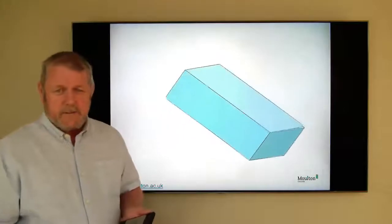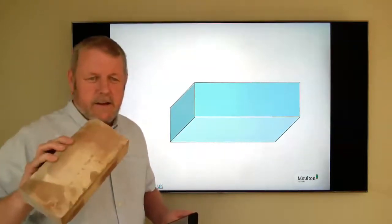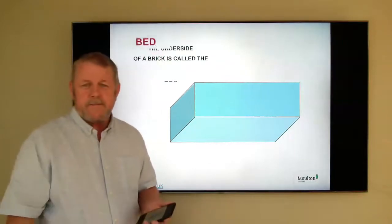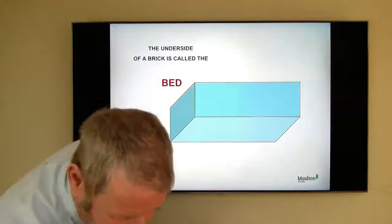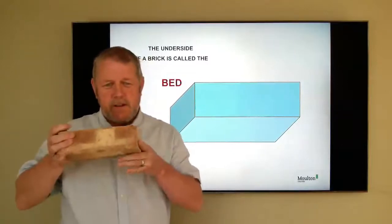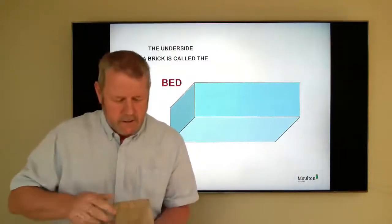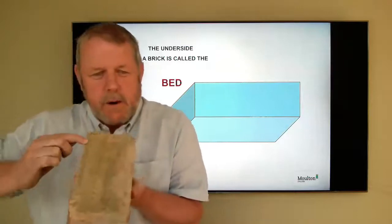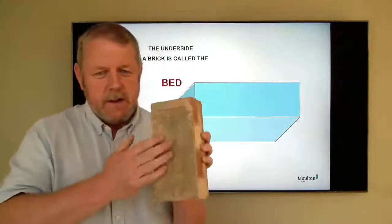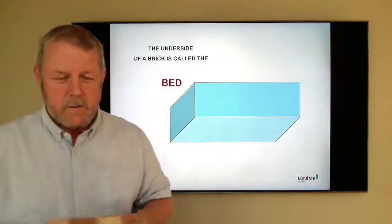And then if we have a look on the underside, so the underside of the brick is called the bed. So we'll just recap on there. We have the stretcher face. We have the header face. The edges of a brick are called the aris. This part round the indent is called the margin. The indent itself is called the frog and the bottom of the brick is called the bed.